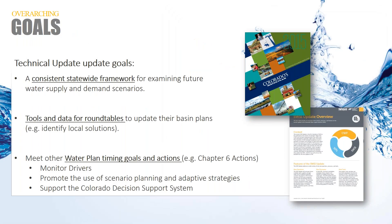The overarching goals of this update are primarily to develop a consistent statewide framework for looking at our future supplies, demands, and gaps. That framework will provide robust tools and data sets for roundtables to use when they update their basin implementation plans. The water plan mentioned several other goals: looking at drivers that affect our future and setting the foundation for future monitoring, incorporating scenario planning, and leveraging the tools that the state has invested in through the Colorado Decision Support System.